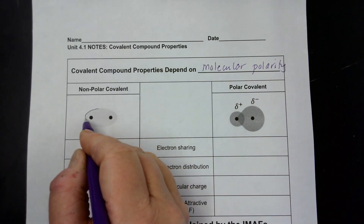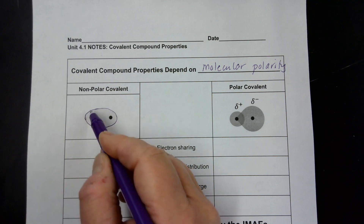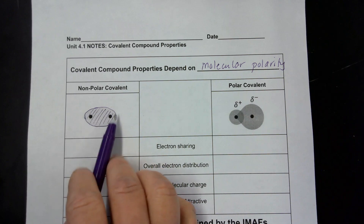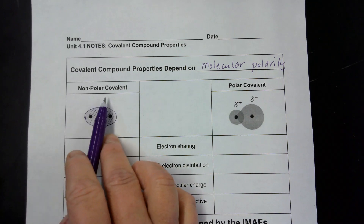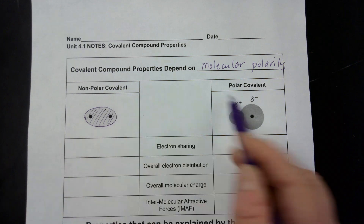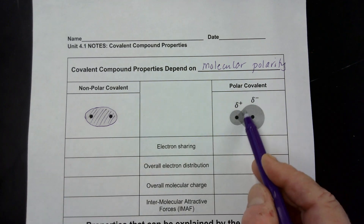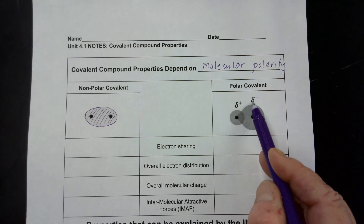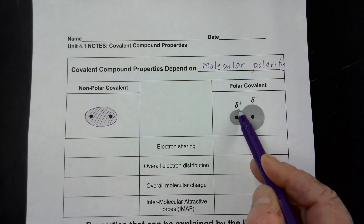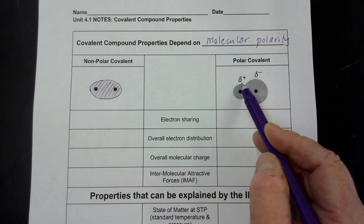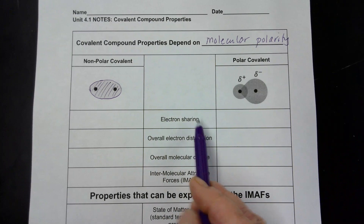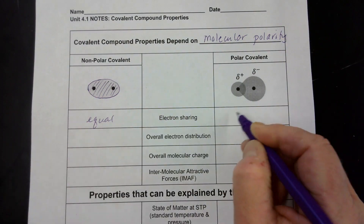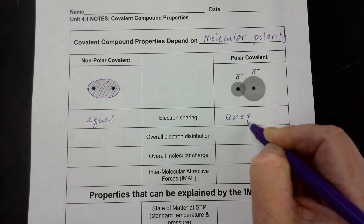Your handout may not have shaded this in properly, but this should have a little bit of shading in the background, showing that electrons are evenly distributed in a nonpolar covalent type of molecule. A polar covalent molecule is showing that the electrons are spending more time around one atom than the other. So if we're looking at electrons sharing: nonpolar covalent will be an equal sharing, and polar covalent will be an unequal sharing.